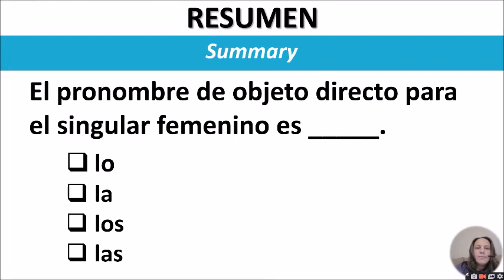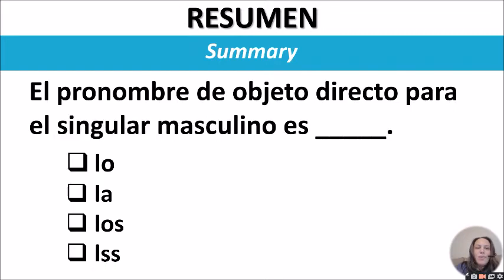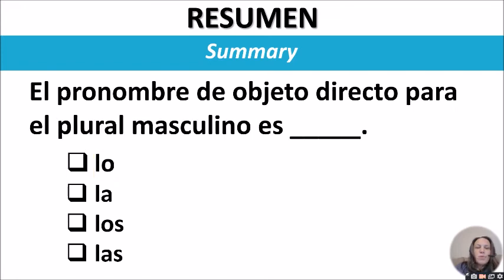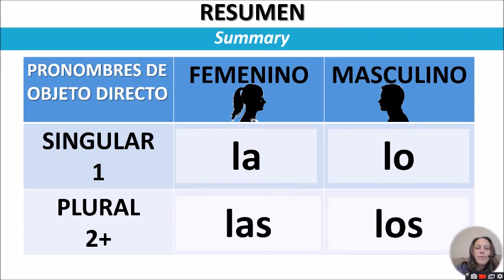Resume. El pronombre de objeto directo para el singular femenino es... La. Para el plural femenino es... Las. El pronombre de objeto directo para el singular masculino es... Lo. Para el plural masculino es... Los.